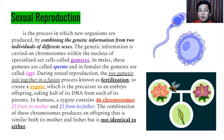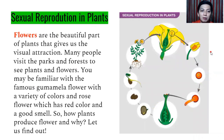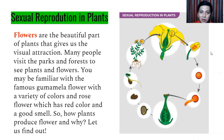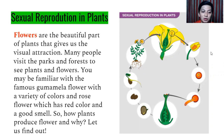Not just in humans, but also in other forms of animals and plants — we can see variation. In sexual reproduction in plants, flowers are the beautiful part of plants that give us visual attraction. Many people visit parks and forests to see plants and flowers. You may be familiar with the gumamela flower — the hibiscus — which comes in a variety of colors, and the rose flower which has a red color and good smell.